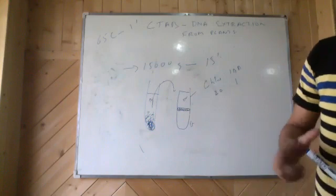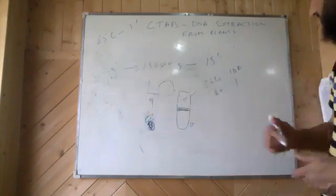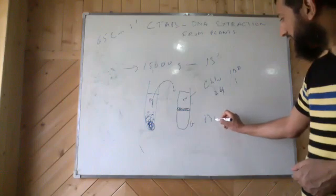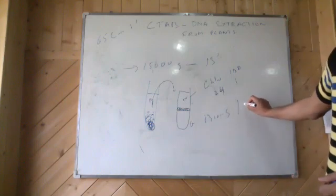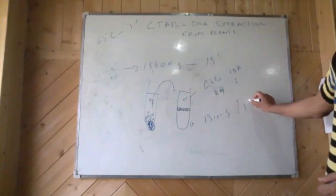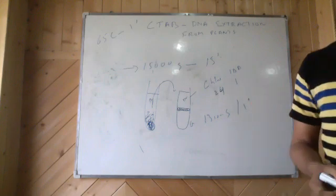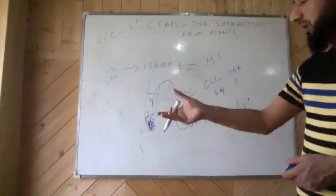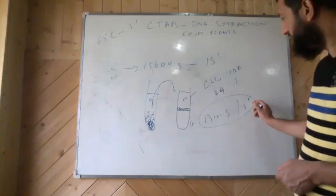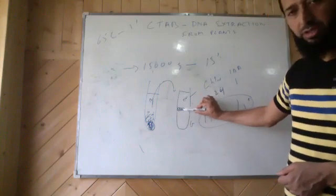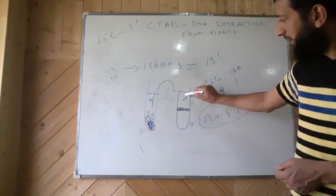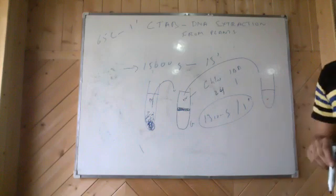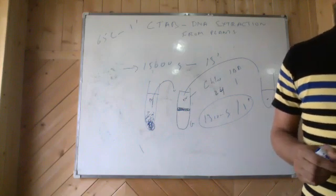And then after adding chloroform:isoamyl alcohol, doing this, what you'll do, you'll centrifuge it for 13,000 G for one minute. So once you take this out, mix chloroform:isoamyl alcohol like this, and then centrifuge 13,000 G for one minute. And then you'll form two zones separated by isoamyl alcohol zone. So you'll again pipette this out upper zone, aqueous phase, and put it in a fresh tube. This is the aqueous phase that will have your DNA.